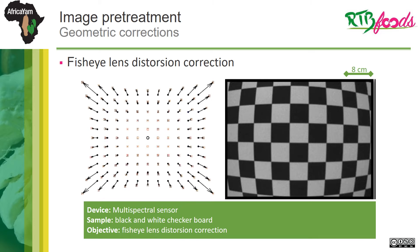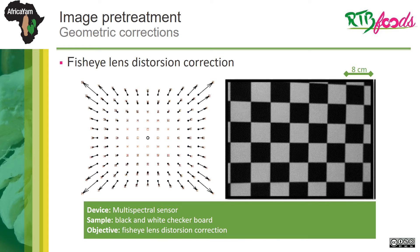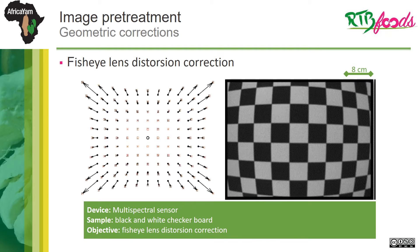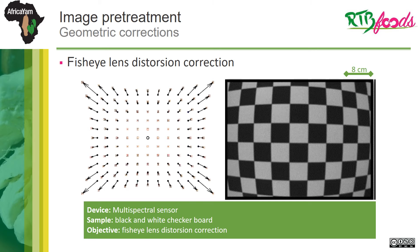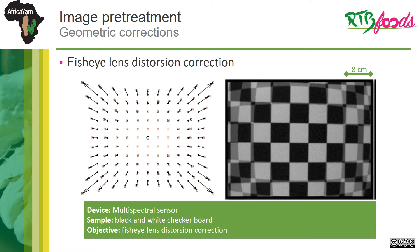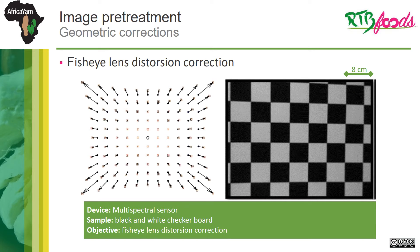This occurs, for instance, with many models of multispectral cameras used to phenotype plant nutrition. The further from the center of the image, the greater the distortion and the less distances are respected. It is therefore possible to introduce a geometric projection to compensate for this.